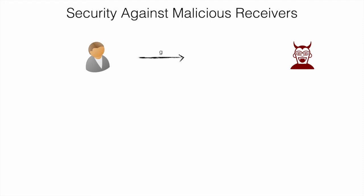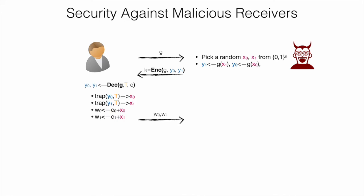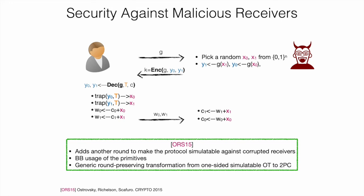So we remove the certifiability property and keep the round complexity down to three. As mentioned, the protocol remains insecure when the receiver is corrupted or malicious — a malicious receiver can always get both secrets. To solve this issue, we need to add another round to the protocol. Our approach follows the work of Ostrowski et al. from Crypto 2015, but we need to handle this carefully because we also want to keep the protocol black-box in its use of the underlying trapdoor permutation. This is another challenge we need to overcome, and we managed to do so — I refer to the paper for more details.